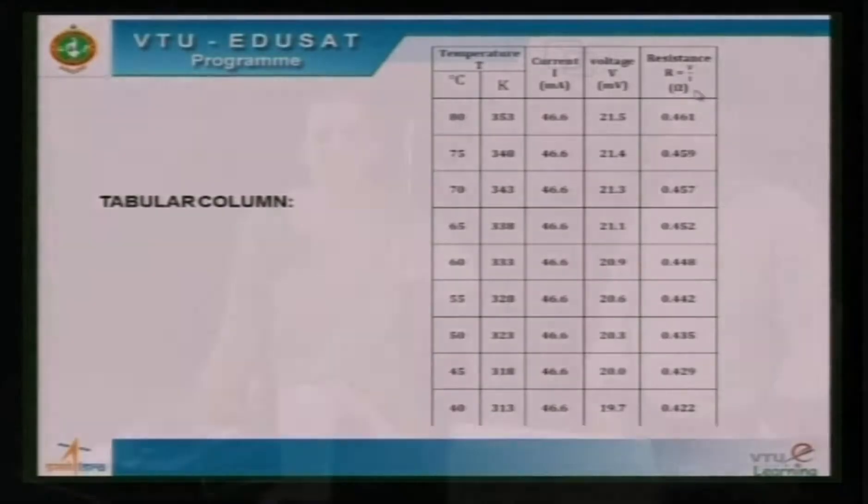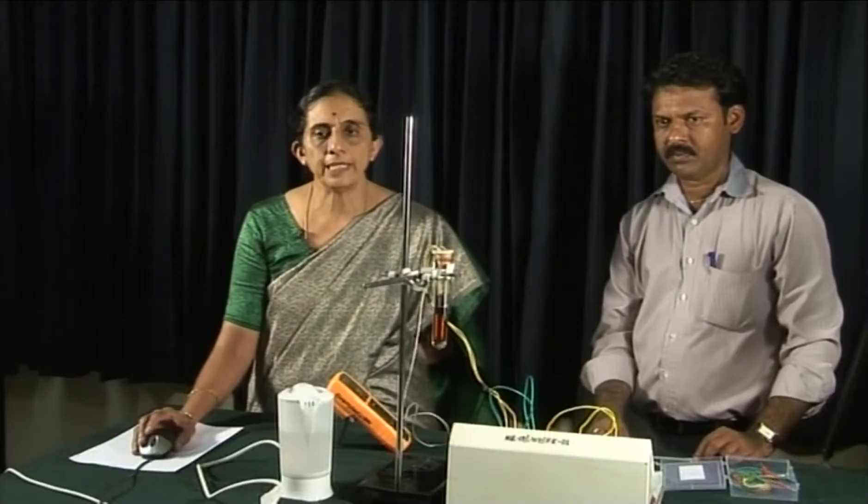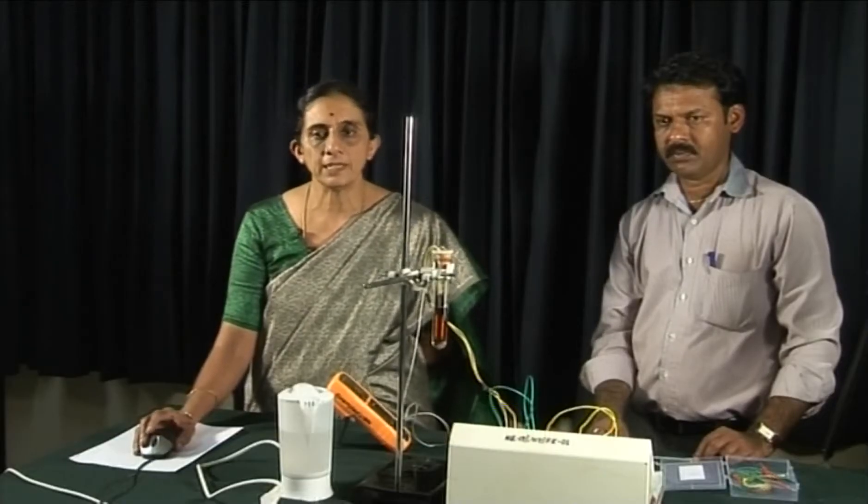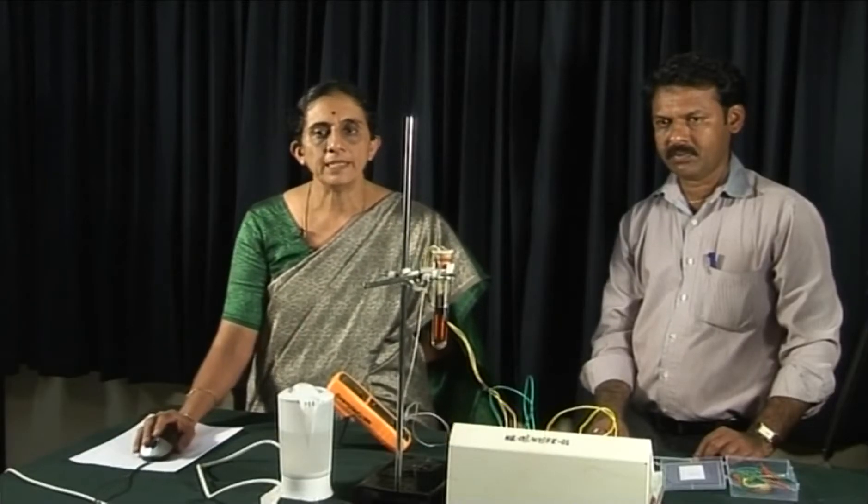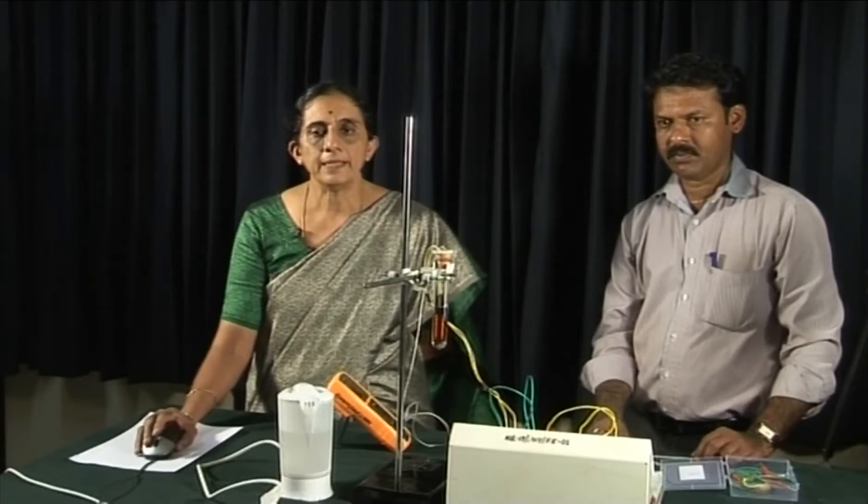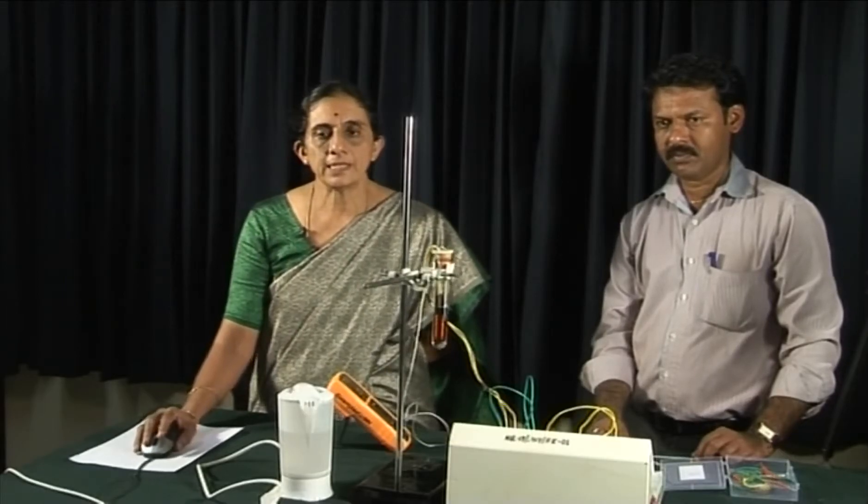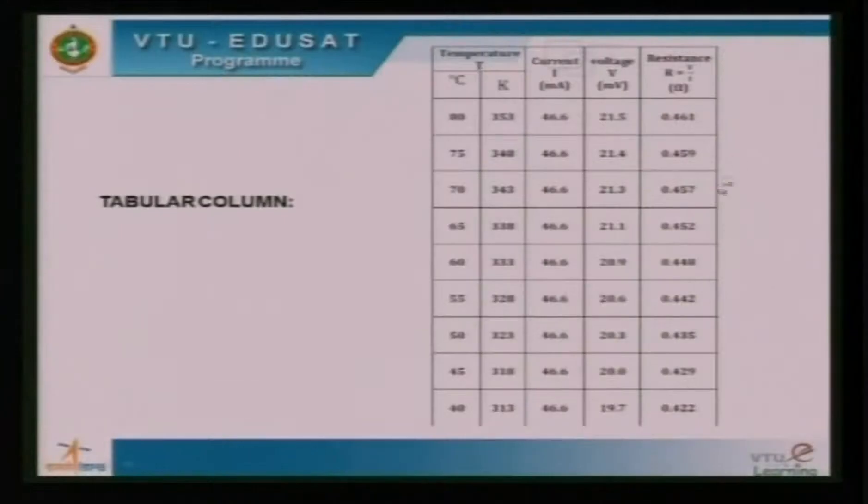With this we will calculate the value of resistance of the copper coil at various temperatures using simple Ohm's law formula R equals V by I. So the resistances are calculated here. Then we will notice that as the temperature decreases, resistance has also decreased.